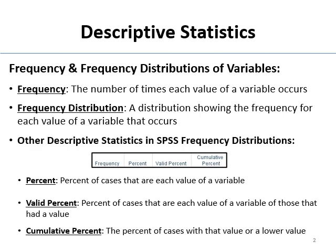Finally, cumulative percent is the percent of cases that had a value at that level or lower. So the cumulative percent of 28-year-olds would tell you the percent of folks who were 28 or younger. It's actually one that students have problems with.